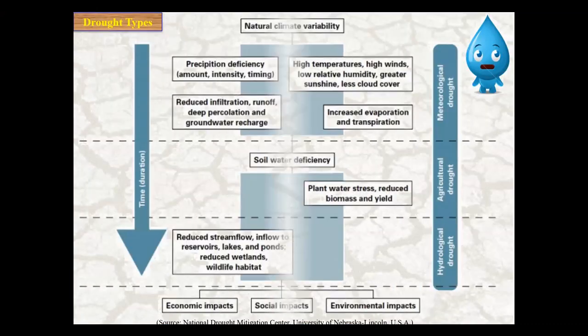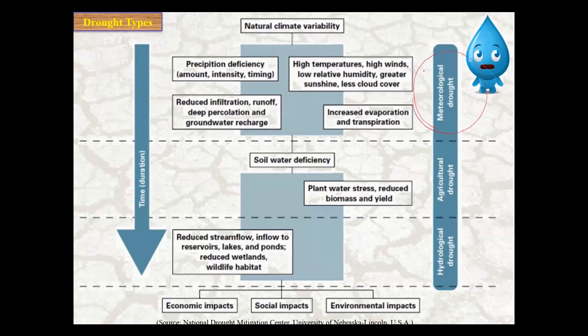If you remember, in the previous session I discussed about drought types. According to the American Meteorological Society in 1997, there are definitions and types in four categories: meteorological drought, agricultural drought, hydrological drought, and socio-economic drought. In this video we want to focus on meteorological drought.